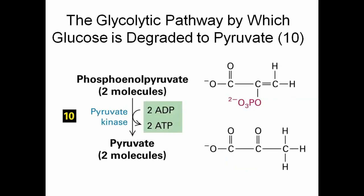In the next step, phosphoenolpyruvate is dephosphorylated — meaning the phosphate group is removed. Observing the structure, you can see there was a phosphate group in the earlier structure of phosphoenolpyruvate, and when it is converted to pyruvate, the phosphate group is removed. Another peculiarity is that pyruvate kinase is considered a key glycolytic enzyme. This reaction is also an irreversible reaction.